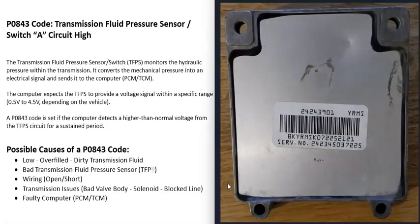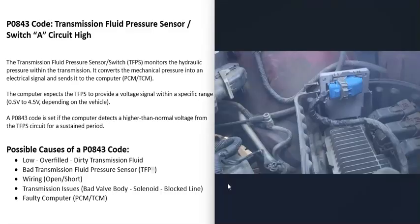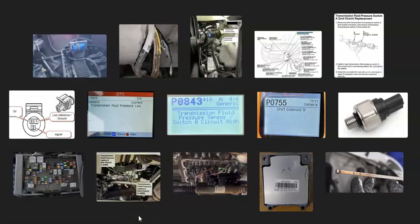The last possible cause is some kind of problem with the computer — a bad powertrain control module or a bad transmission control module. Usually when this happens you'll be getting a lot of other codes, because when a computer goes bad it typically doesn't just give you one code. If you do think you have a computer problem, be sure the battery is good and the alternator is charging correctly, because these computers all need a stable power supply and a good ground — otherwise that can throw them off and cause issues.